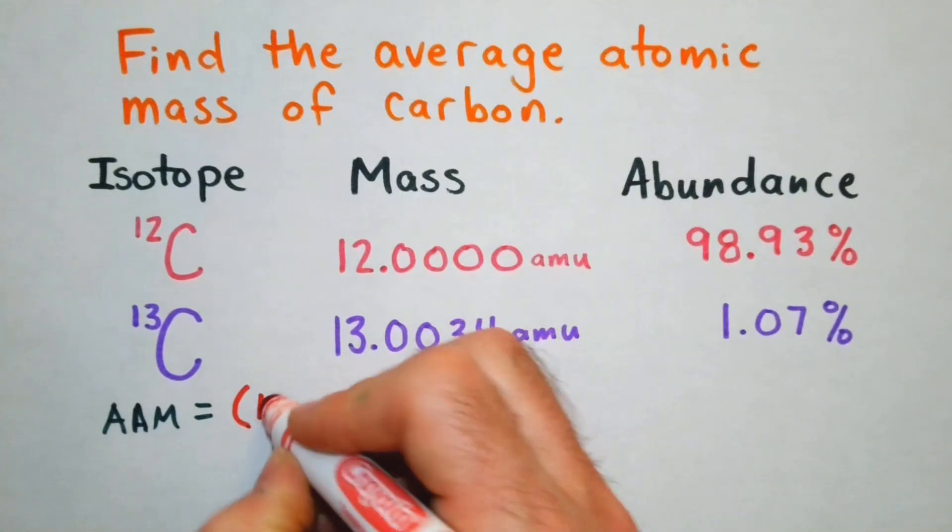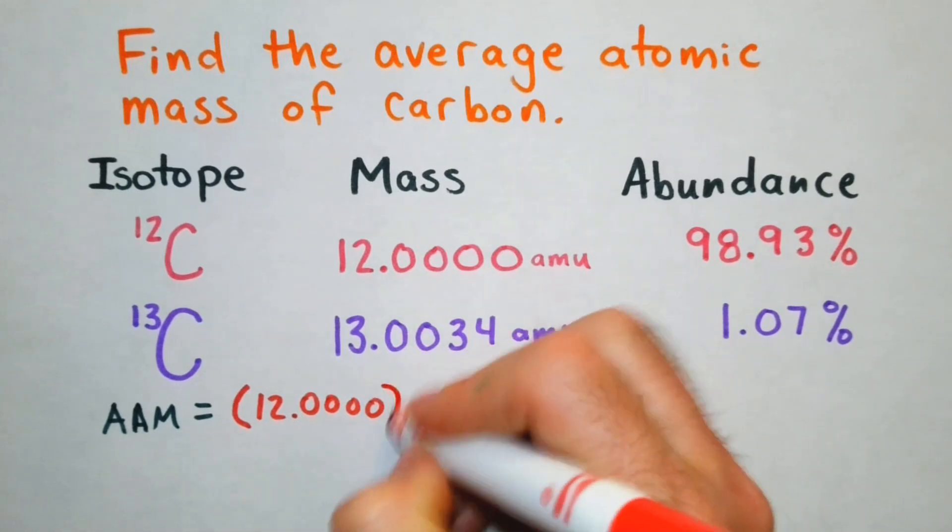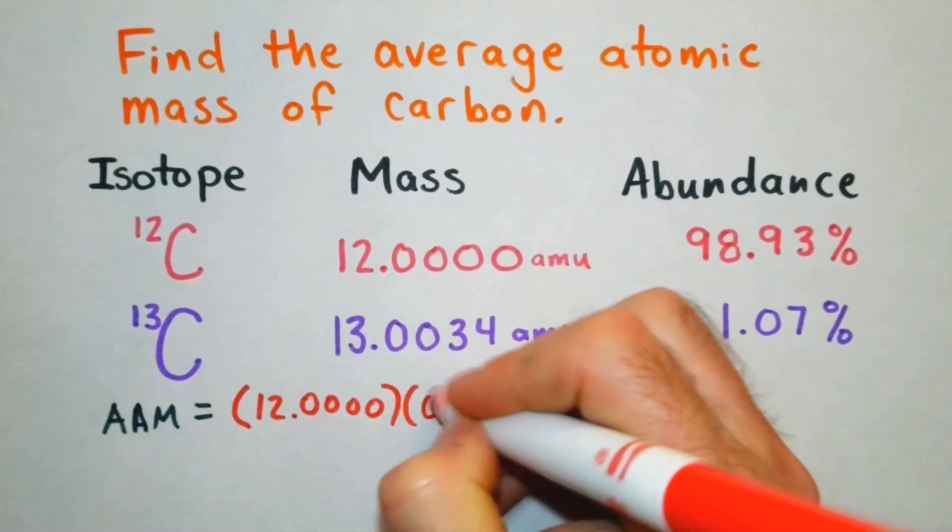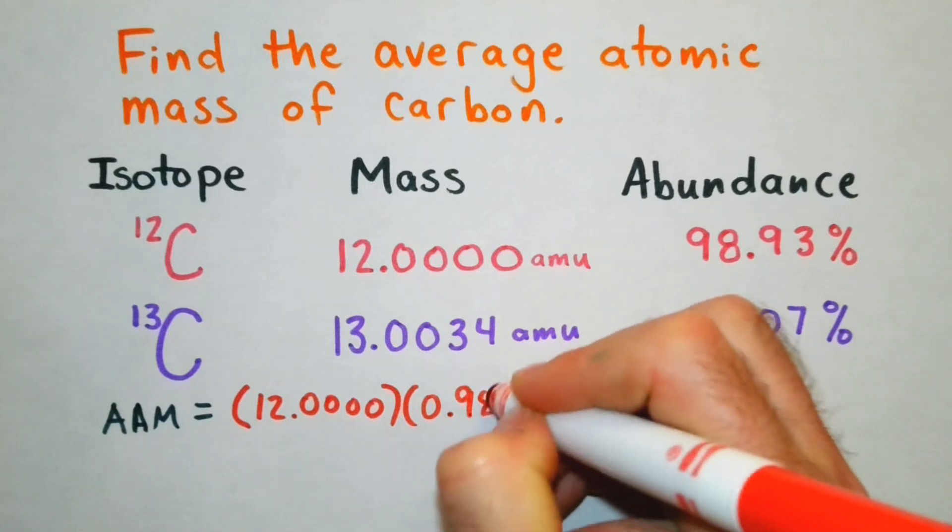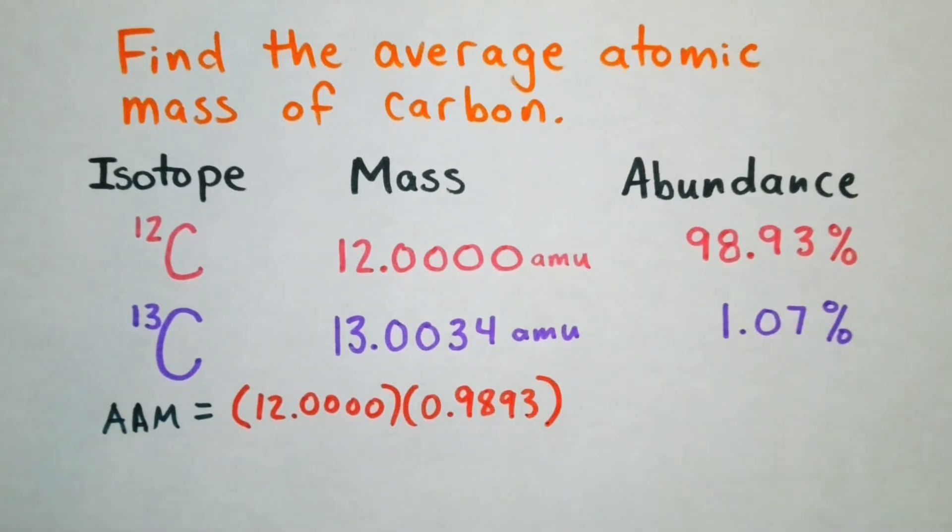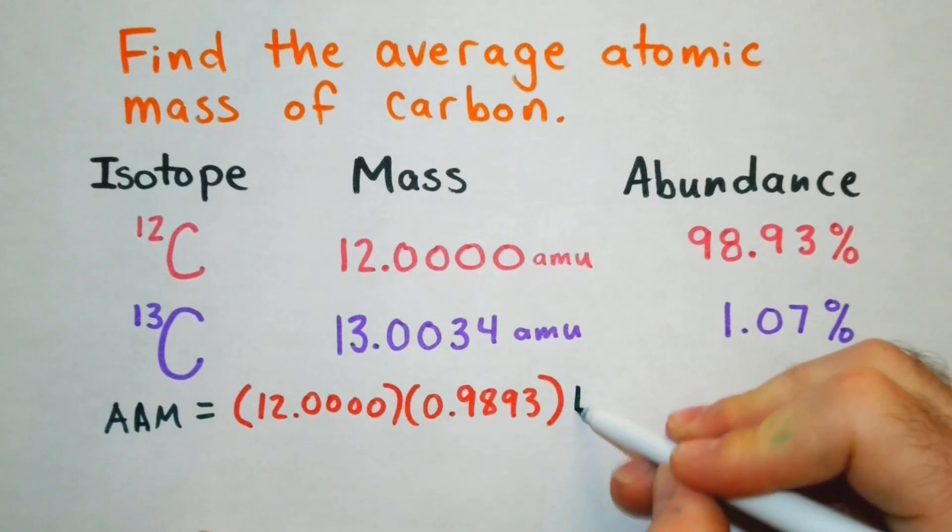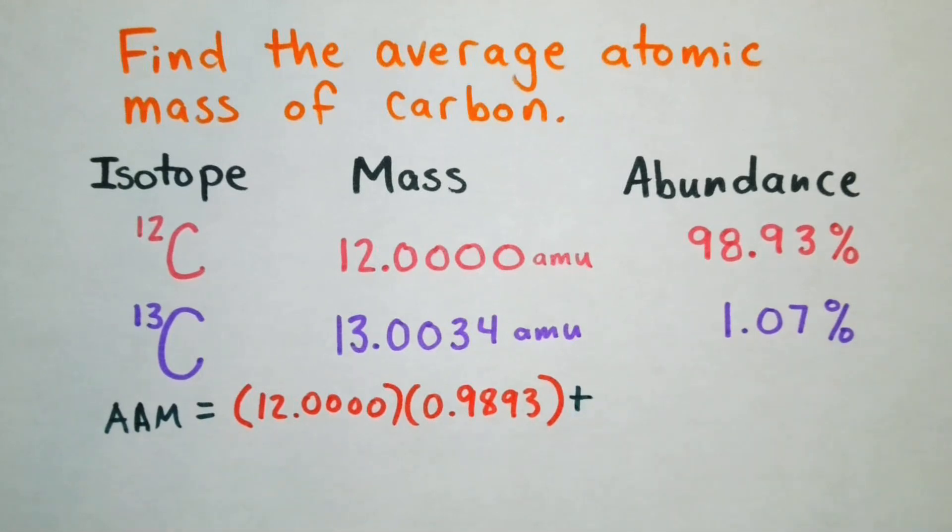So we have 12.0000 times our 0.9893 as our percent in decimal form. And then we'll add the next product of the other isotope's mass and abundance.